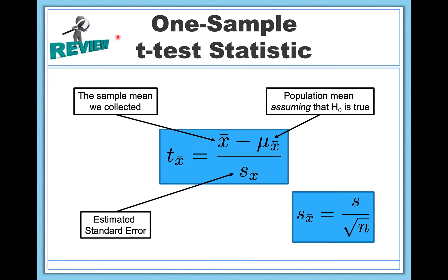Both the one-sample z-test and the one-sample t-test are appropriate for just what the name says: one sample. This is useful when you have one group and you're testing that one-group sample mean against a hypothesized population parameter. But what happens when you want to test more than one group? That's what we're going to talk about today.